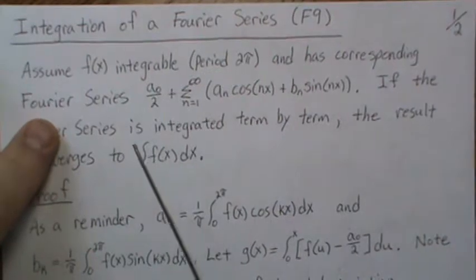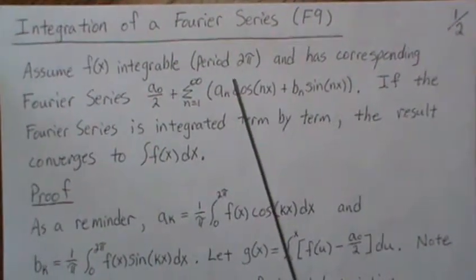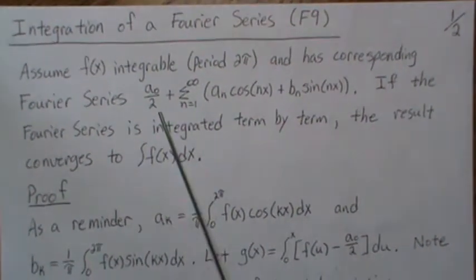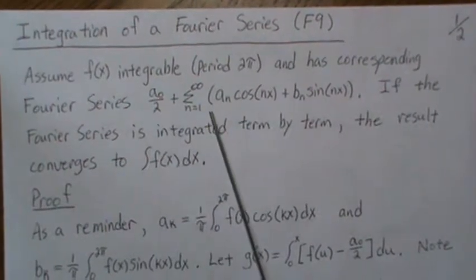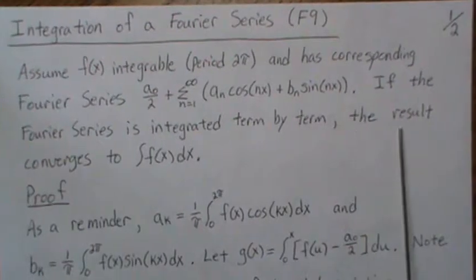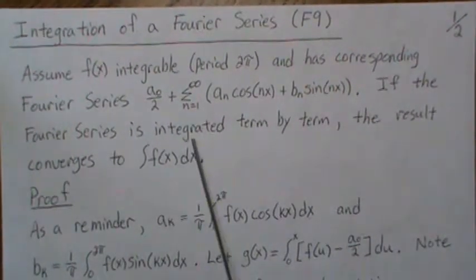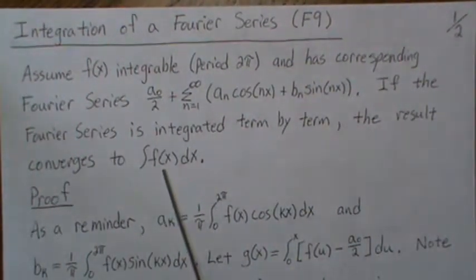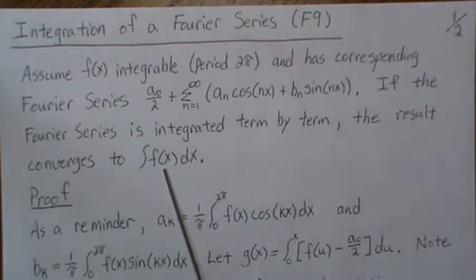So assume that f(x) is integrable from this period and has corresponding Fourier series. And if the Fourier series is integrated term by term, the result converges to the original integral of f(x)dx.